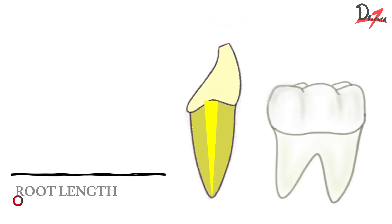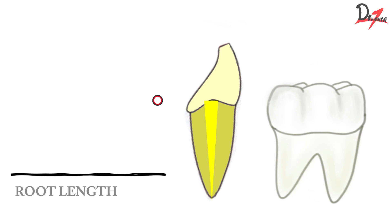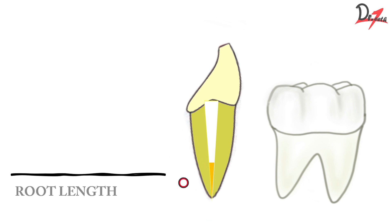The first factor is root length. Whenever we have a tooth that has a long or sufficient root, we can have a post that is long. Because greater the post length, the better will be the retention and the stress distribution. But we have to keep in mind that at least three to four mm of apical gutta percha has to be there.